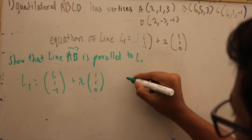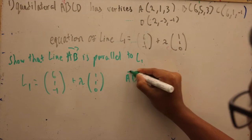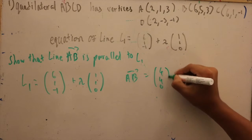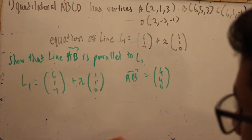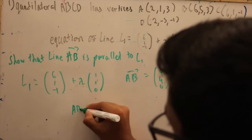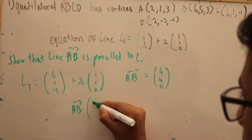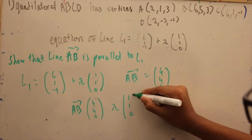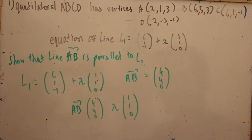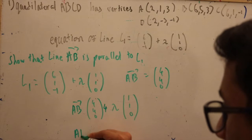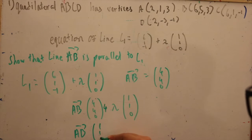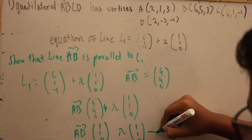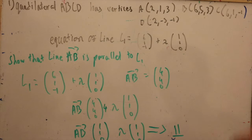We will be focusing on the direction vector of L1. To see if both vectors are parallel, they must share the same direction, meaning they must have the same values for X, Y, and Z. Since AB has (4, 4, 0) and the direction vector has (1, 1, 0), we can factor out 4 from vector AB to get (1, 1, 0). Vector AB, after being simplified, shares the same direction with the direction vector of line L1, stating that these two vectors are parallel.